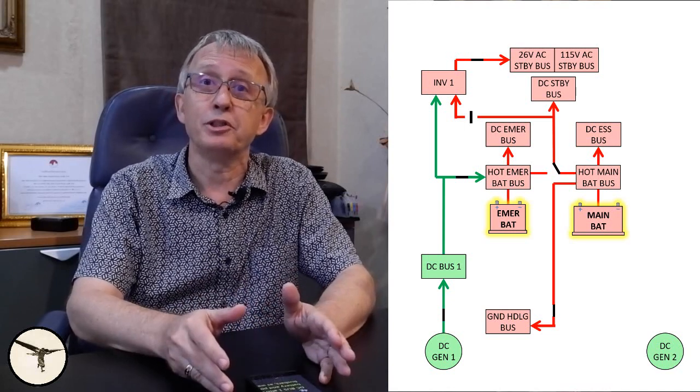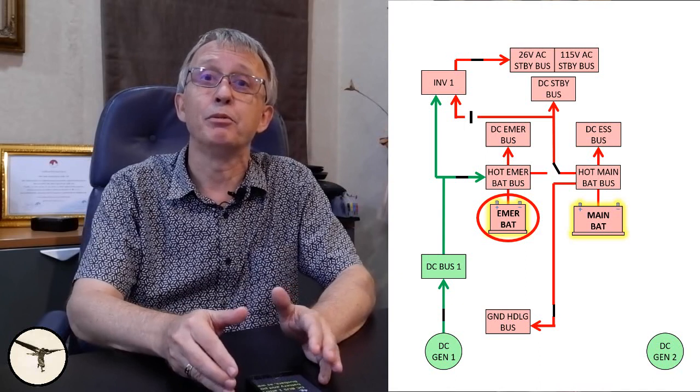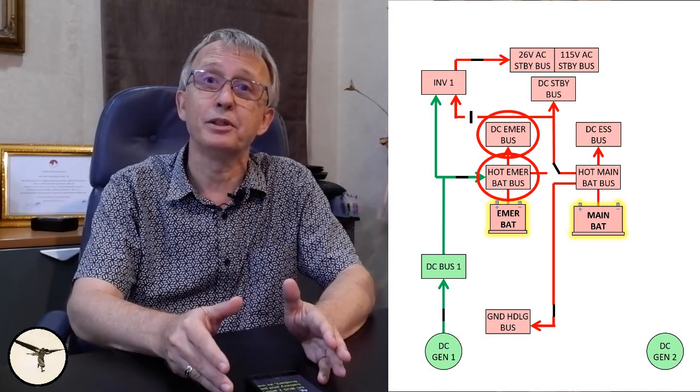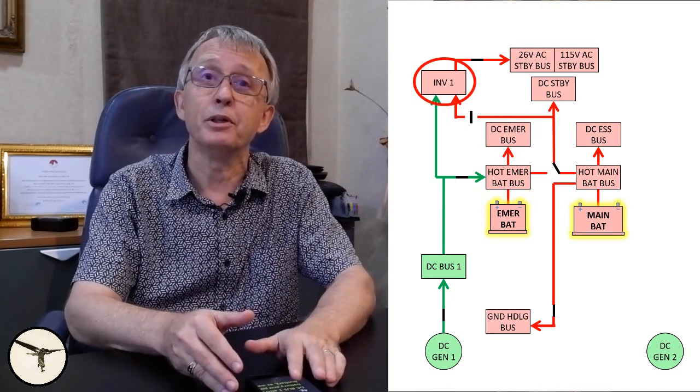DC bus 1 also charges the emergency battery and powers its associated bus bars as well as inverter number one.